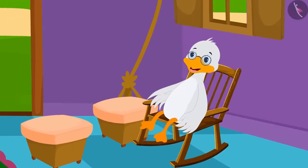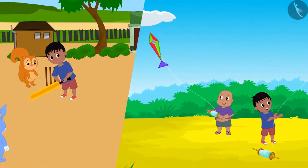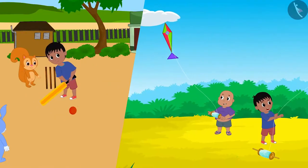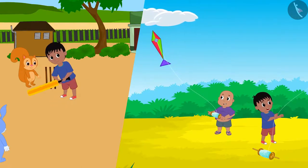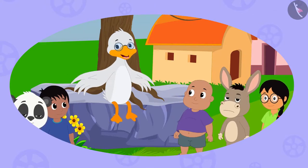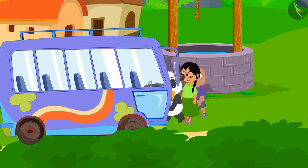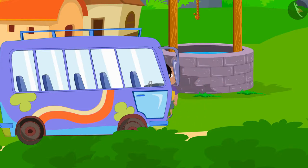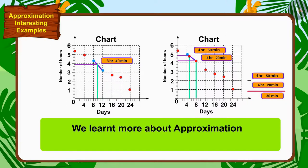Uncle is very happy that the children have now spent much less time on the phone and have started spending more time in other sports and studies. As promised to the children, uncle took them on a trip seeing that the time spent on the phone has reduced. Children, in this video, we learnt more about approximation by some interesting examples.